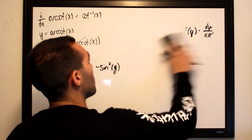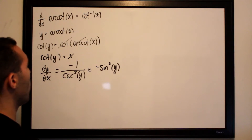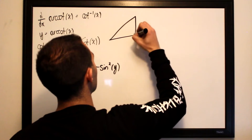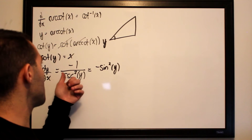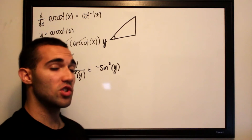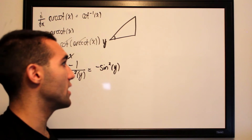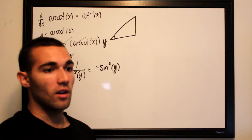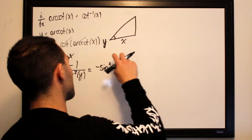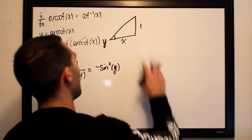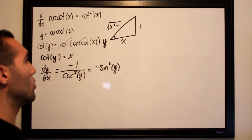To put things back in terms of x, we construct a triangle with angle y in the corner. We know cotangent of y equals x. Since cotangent is adjacent over opposite, we label the adjacent side x and the opposite side 1. The hypotenuse is then the square root of the sum of their squares, which is the square root of x squared plus 1.